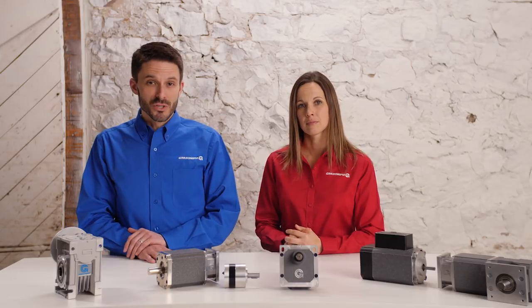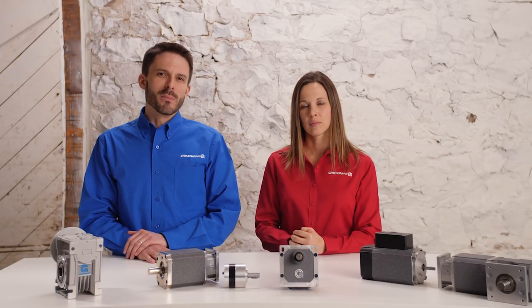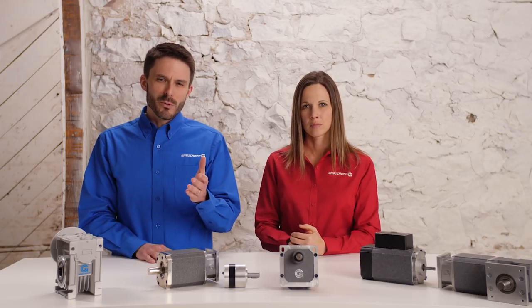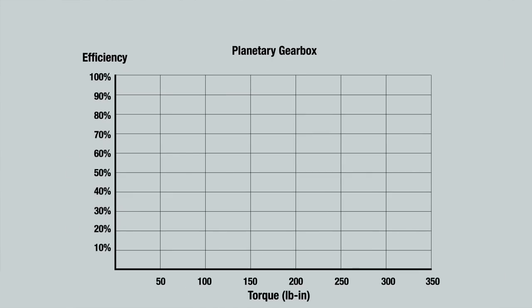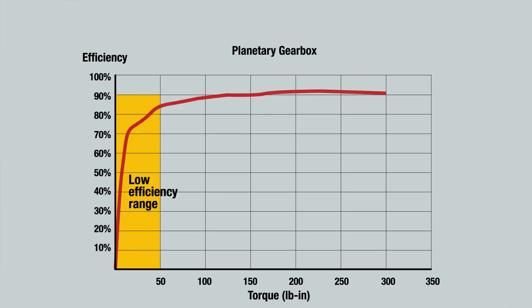Next we need to look at the efficiency curve. It's important to review these curves when making a reducer selection, so be sure to get them from the manufacturer. Our sample curve is for a planetary gearbox and is a graph of torque versus efficiency. It's important to emphasize that efficiency is not constant with torque. This data is used to calculate the torque capacity of a gearbox from a thermal standpoint. An important observation is that selecting a gearbox that is too large for the application will result in operating in the low efficiency range of the curve. For instance, using this gearbox in an application with less than 50 inch-pounds of torque is extremely inefficient and is not using the gearbox to its full potential.